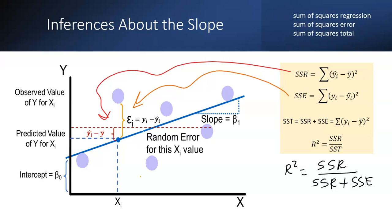R-squared is equal to SSR divided by (SSR plus SSE). SSE is the sum of squared errors, SST is the sum of squares total, and SSR is the sum of squares regression. These values are beneficial for finding further calculations important for elaborating results in research or assignments.